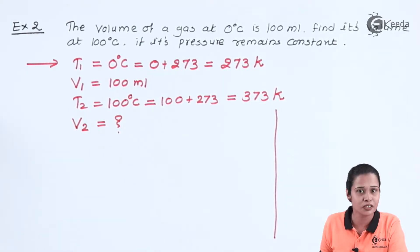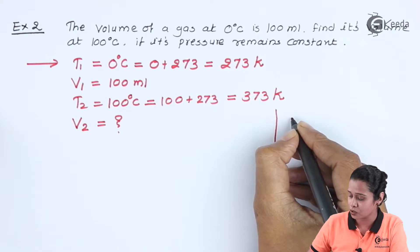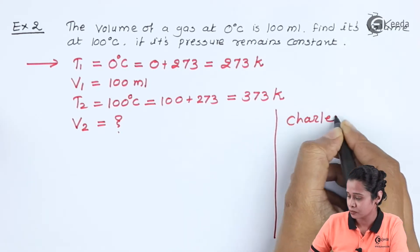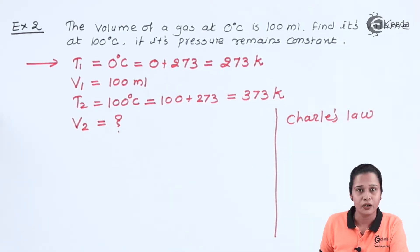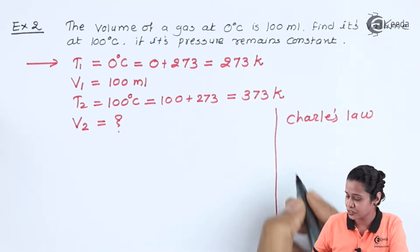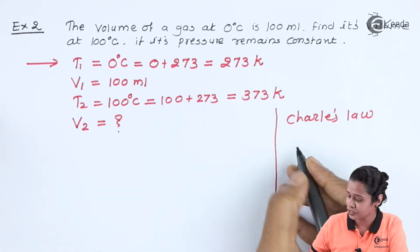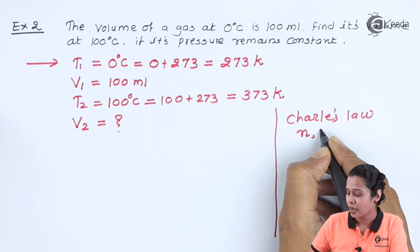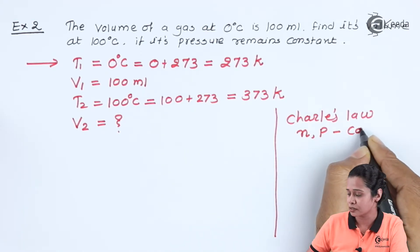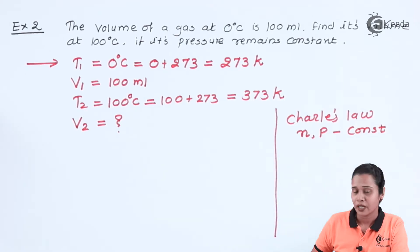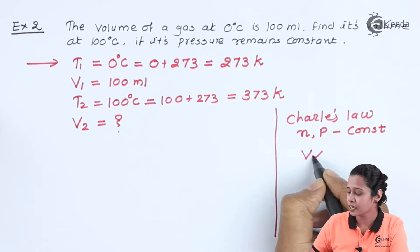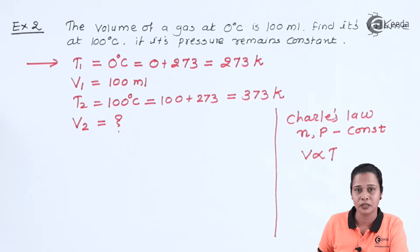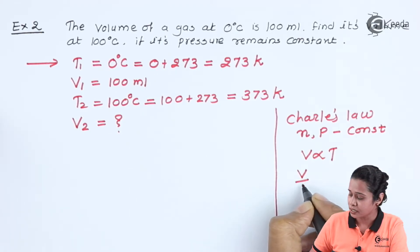We know Charles law. According to Charles law, volume is directly proportional to temperature at constant pressure. In case of Charles law, we have number of moles and pressure is constant. Volume is directly proportional to temperature, so we will write V by T.